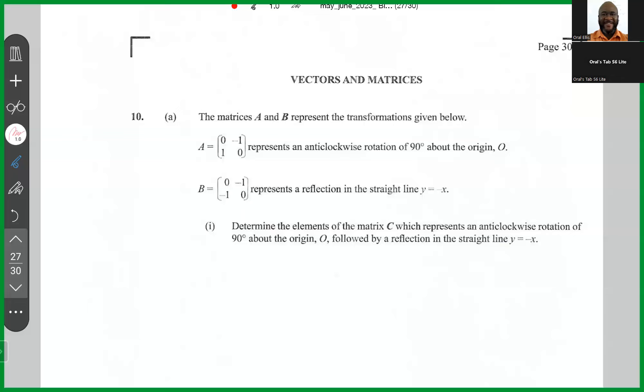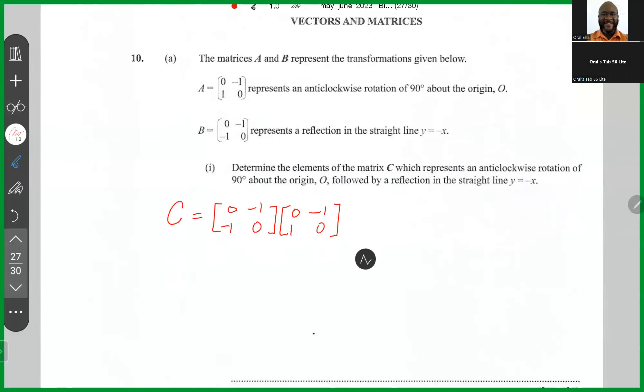So I think this is what you call a composite transformation. And from what I remember, when you're forming a composite transformation, C is going to be the last multiplied by the first. So the last transformation was reflection in y equals minus x, which is 0, minus 1, minus 1, 0, multiplied by the first one, which is 0, minus 1, 1, 0.